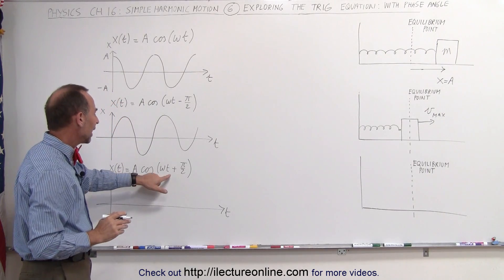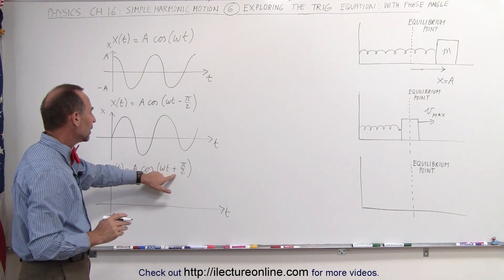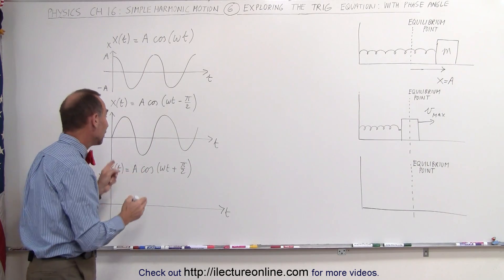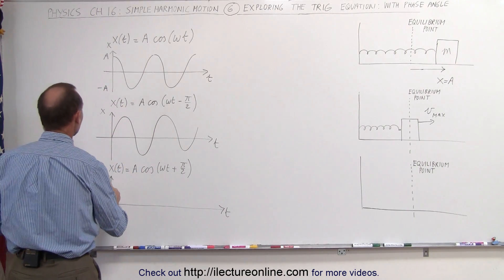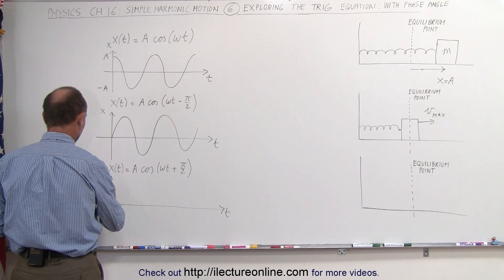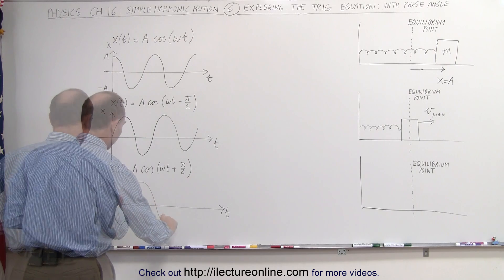Now, what would it be if we had the phase angle as being plus pi over 2? That would move the equation to the left by one quarter of a cycle, which means that it looks like this.